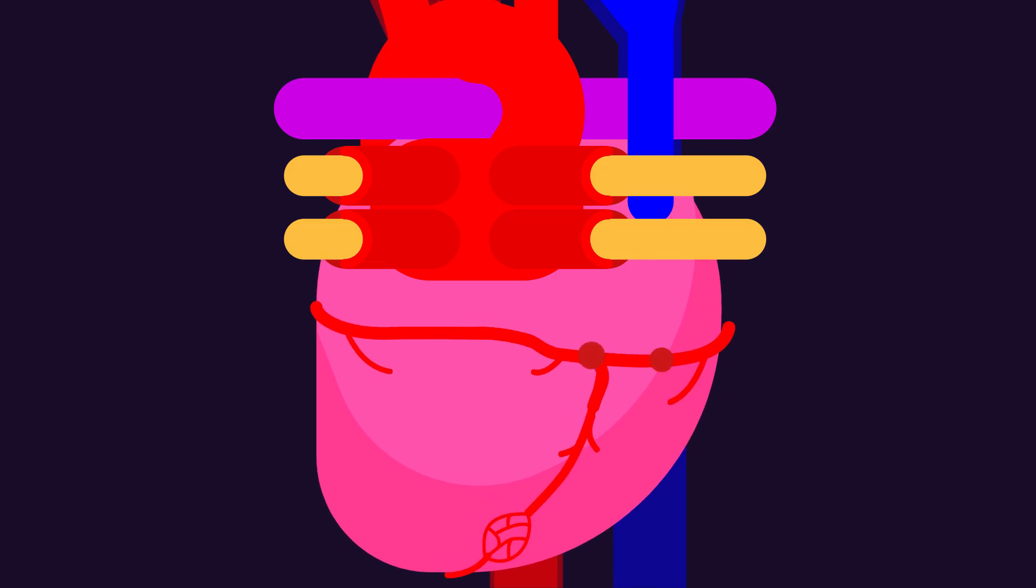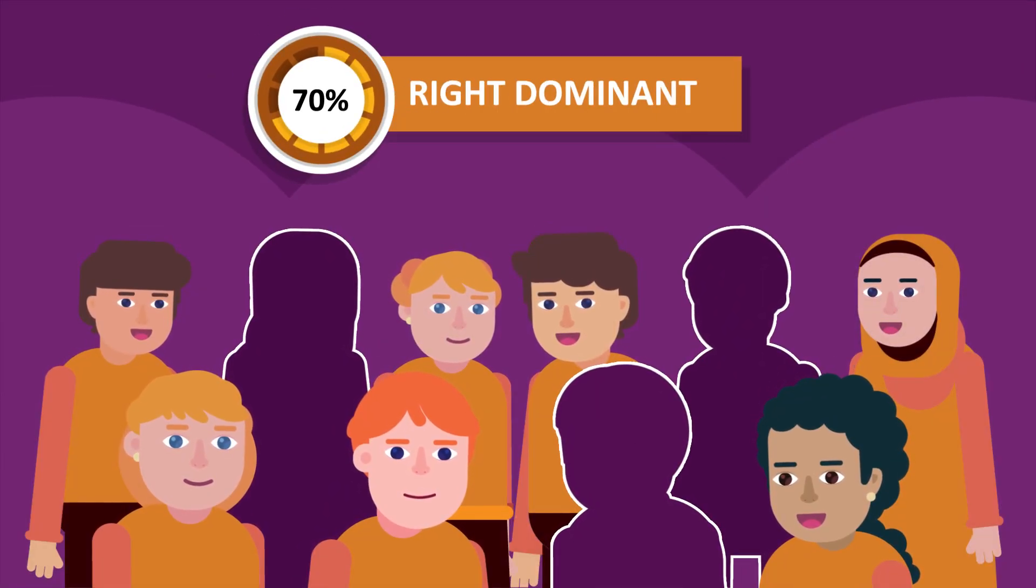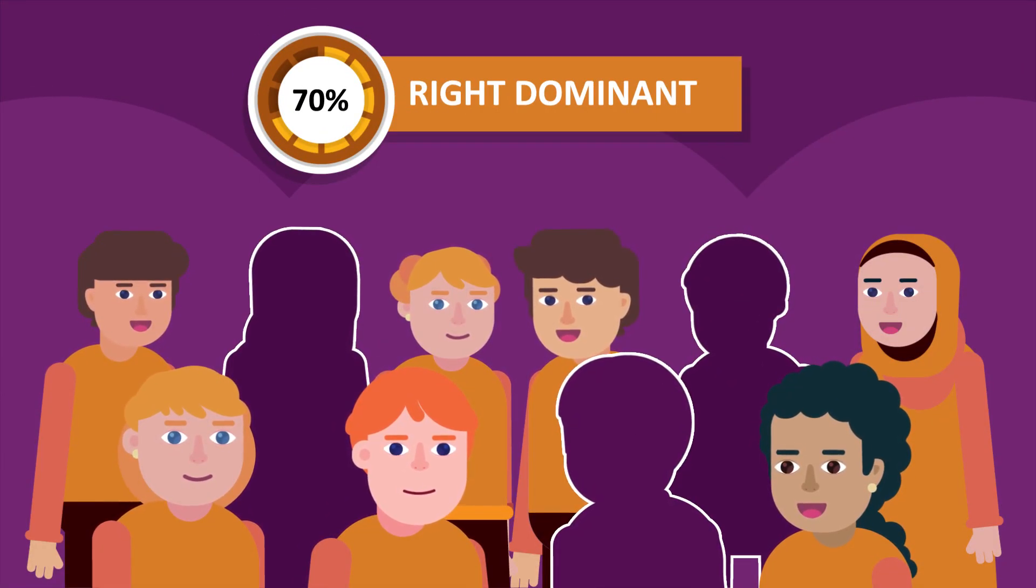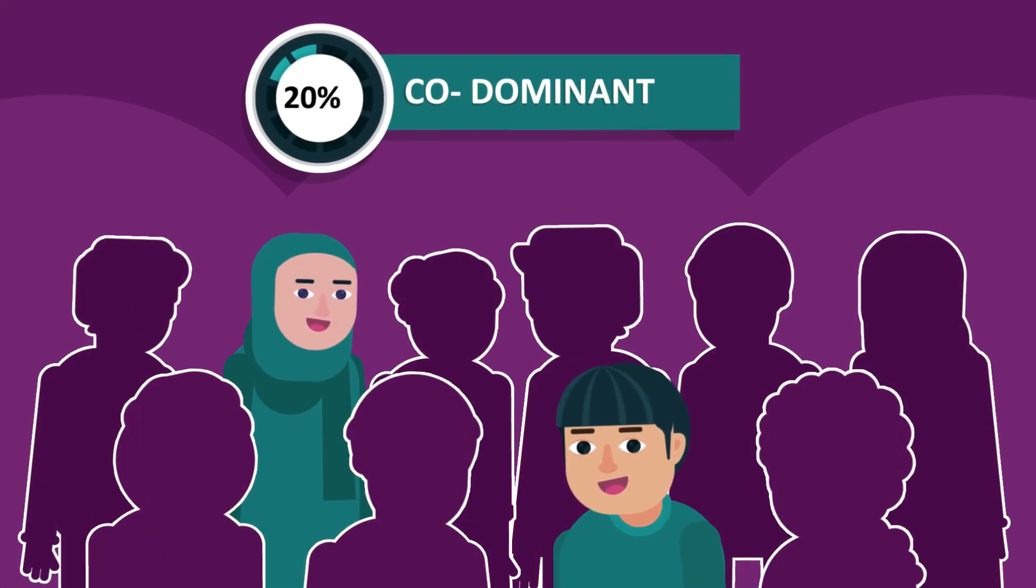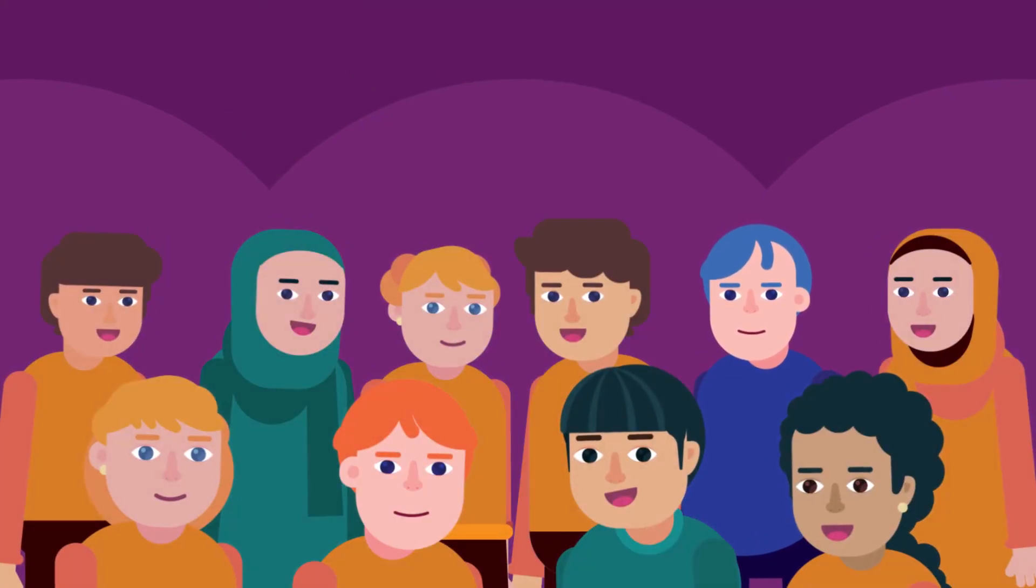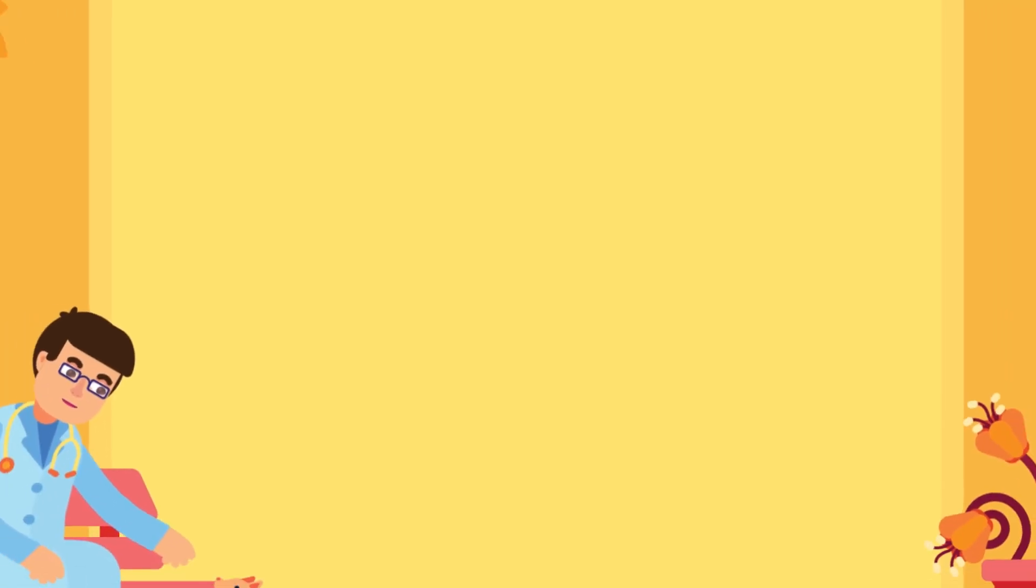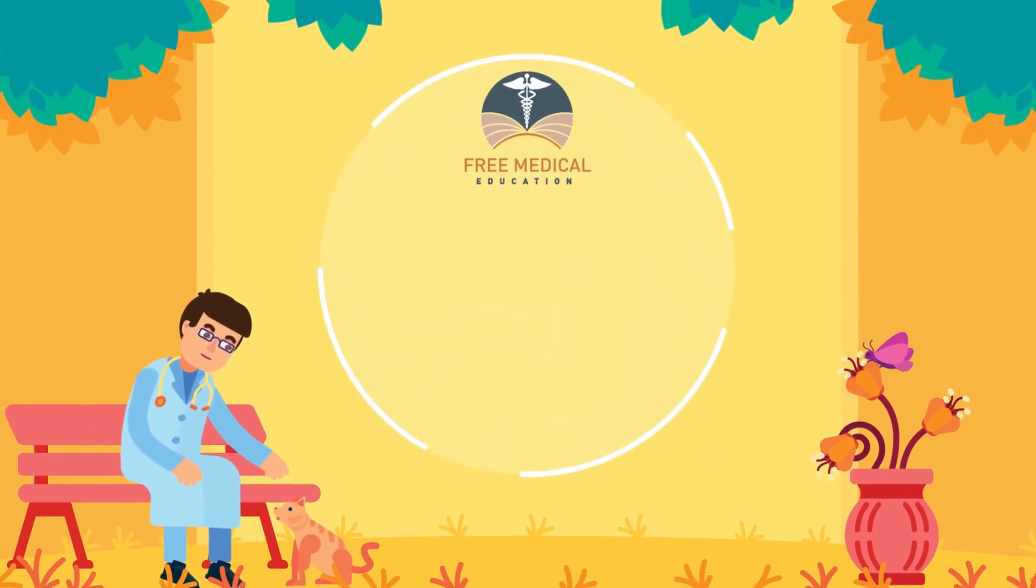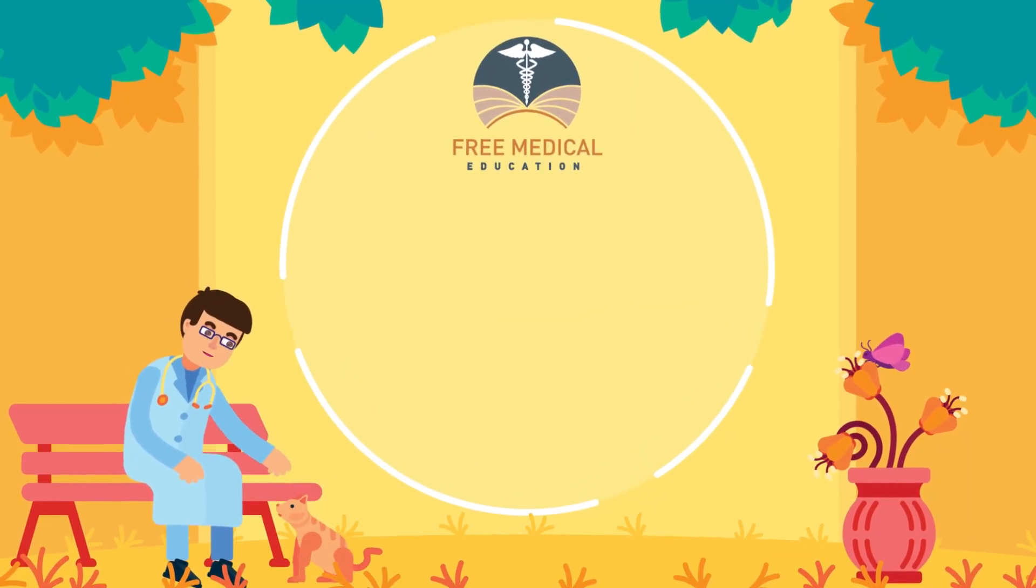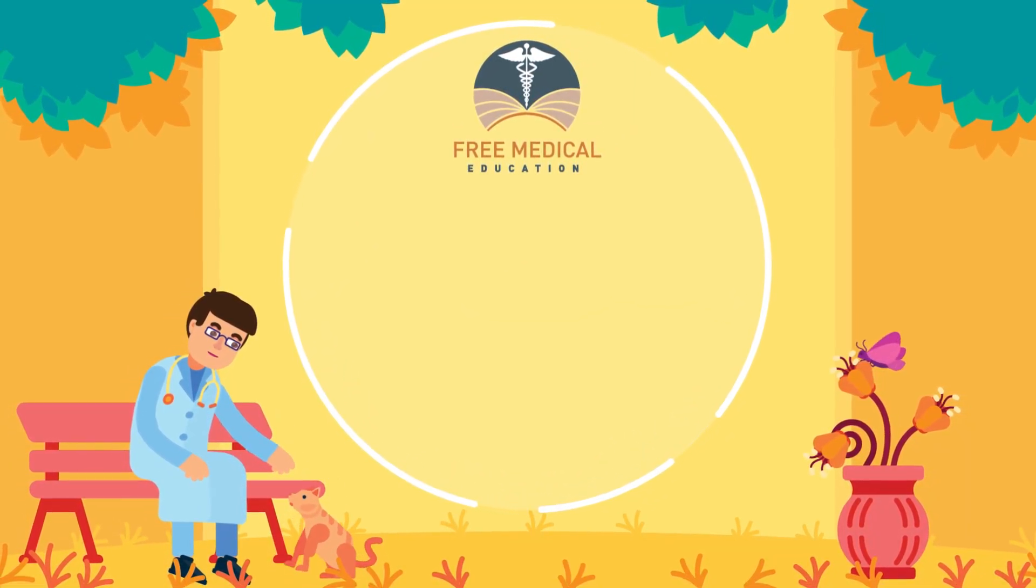If the posterior descending artery is supplied by both the right coronary artery and the circumflex artery, then the coronary circulation would be classified as co-dominant. The usual picture of the population suggests that 70% of people are right dominant, 20% co-dominant, and 10% are left dominant. Thank you very much.